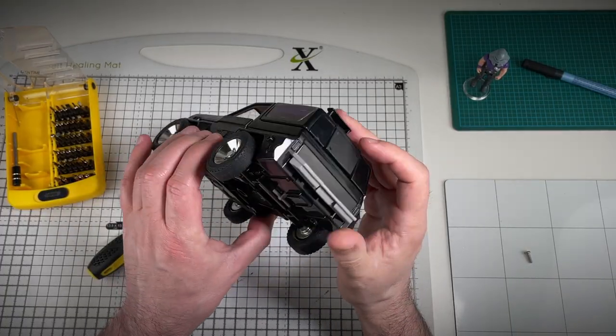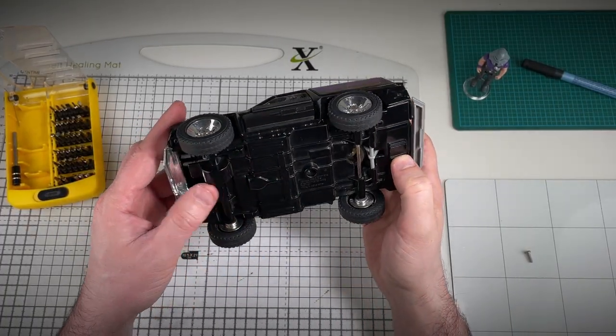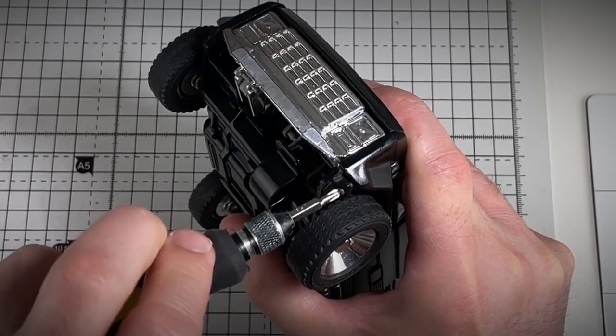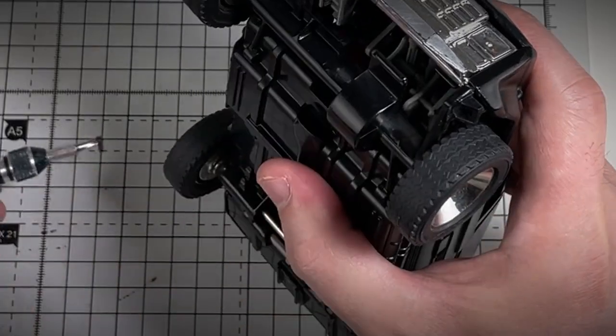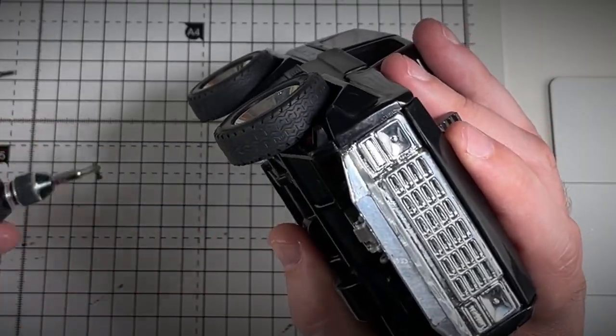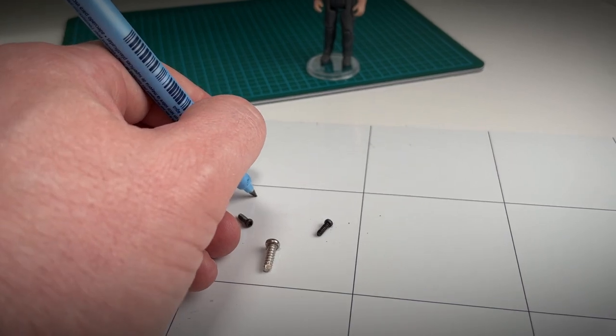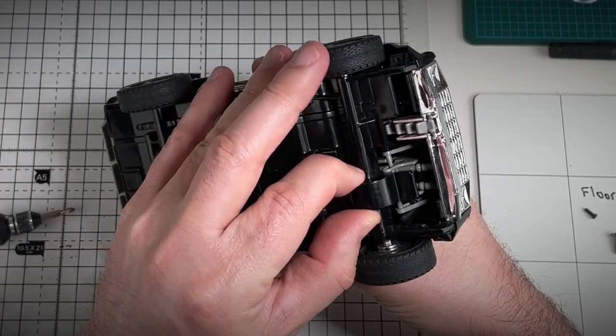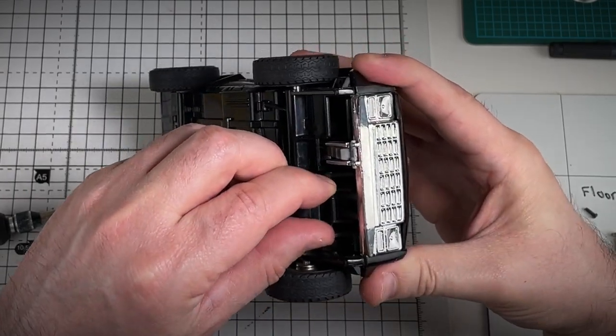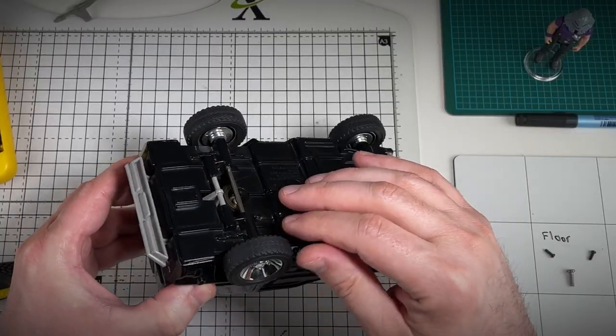Now, where are the other screws? Ah, there's two at the front. Very small black ones. Hopefully if I remove these, I'll get somewhere. As always, I like to use my trusty magnetic mat. There's no movement.